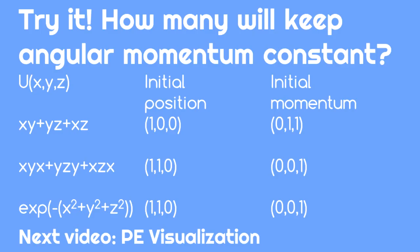You should now be able to predict and test whether a potential energy will keep angular momentum consistent. For each of the potential energies listed on the screen, predict whether they will keep angular momentum consistent. Then, use the code in the link in the description below to check whether you are correct.